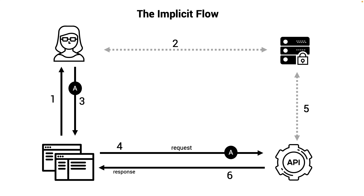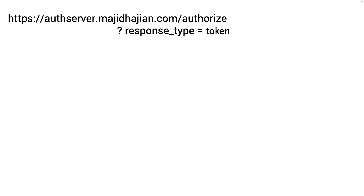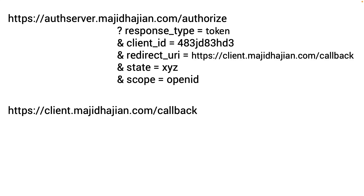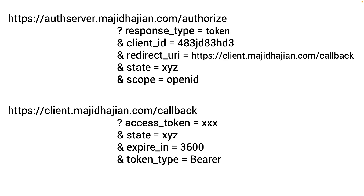Let's see implicit flow in action. On the authorize endpoint, response_type=token indicates this is implicit flow. We pass client_id, redirect_uri, state, and scope — in this case just openid. After authentication, the user is redirected back to the client callback with the access token, state, expiry, and token type directly in the URI. Instead of exchanging a code, you directly receive the access token in the callback.